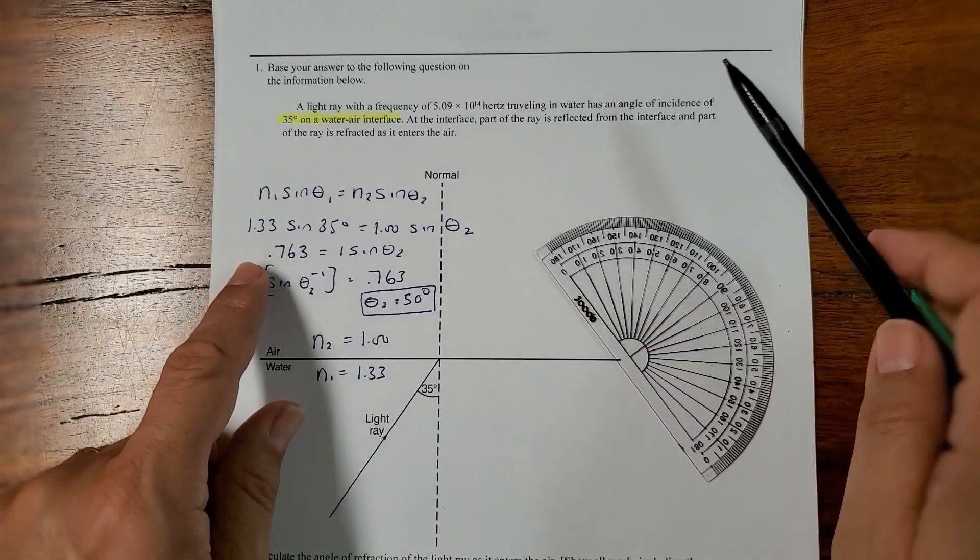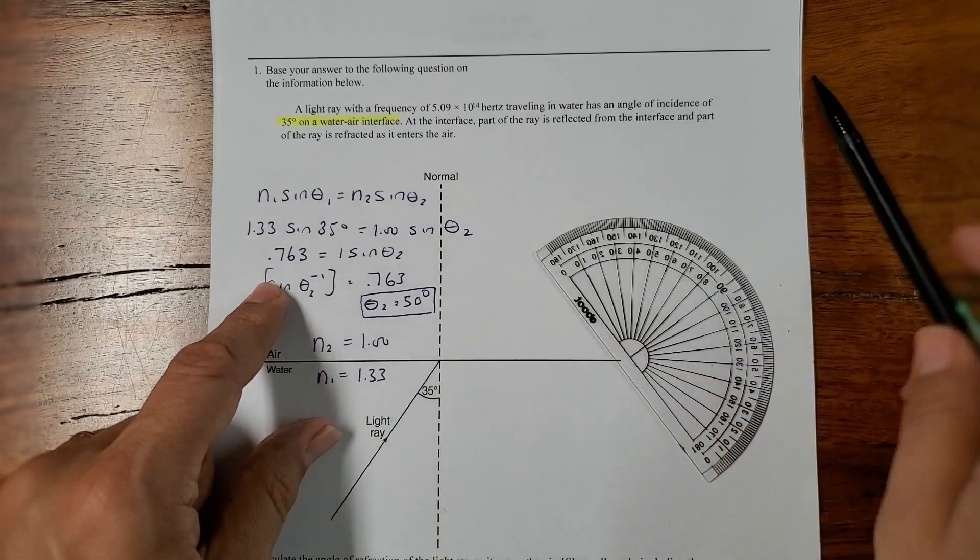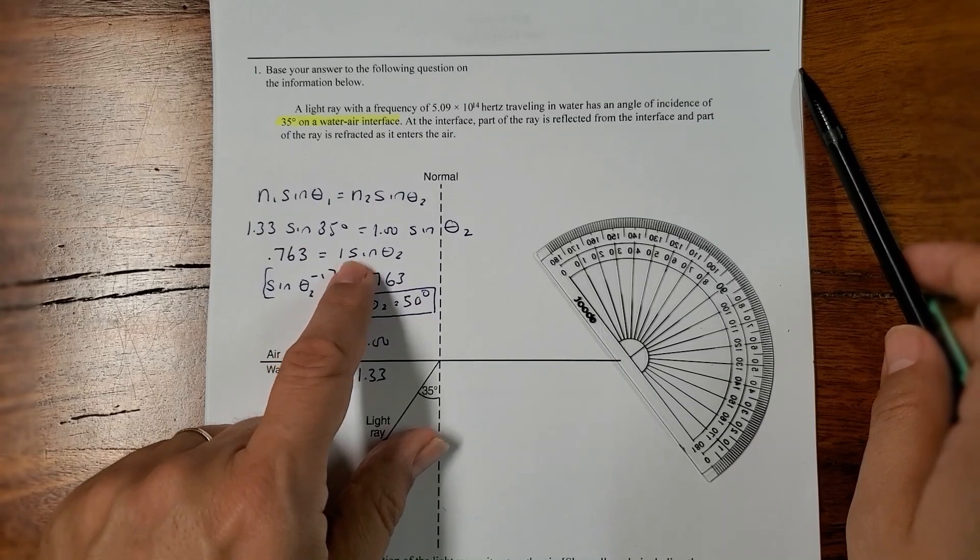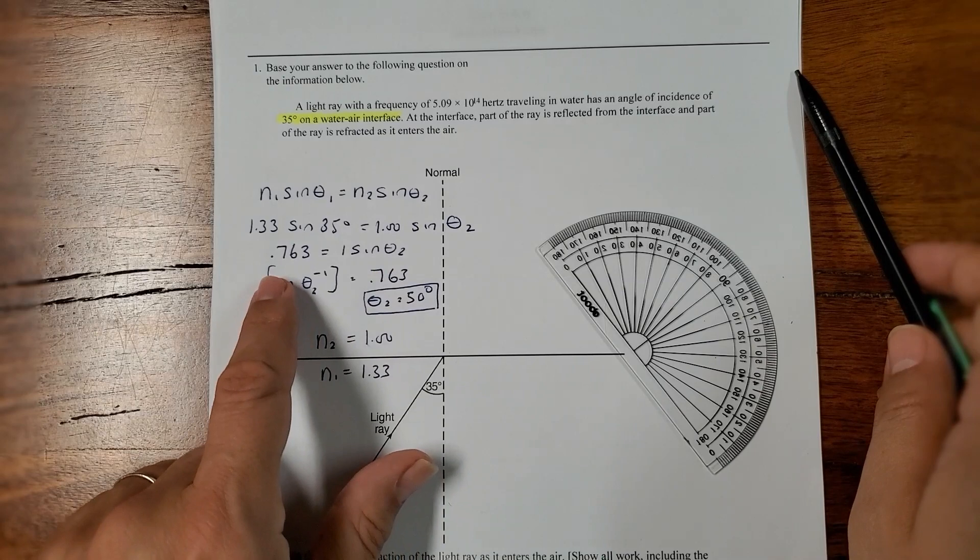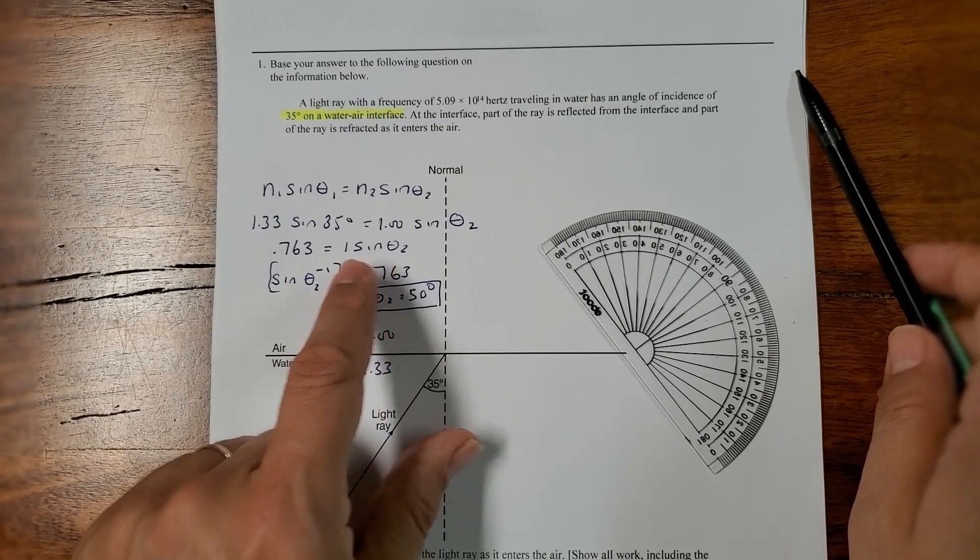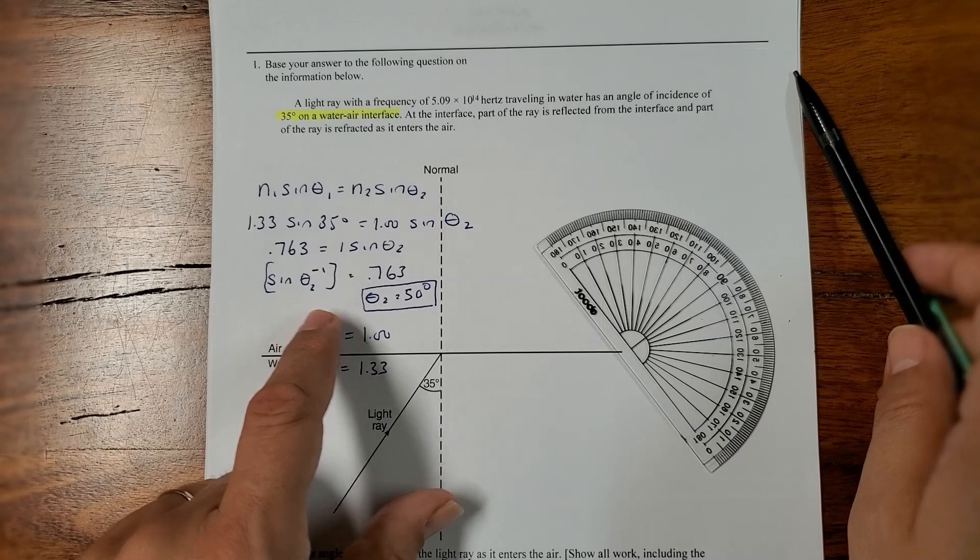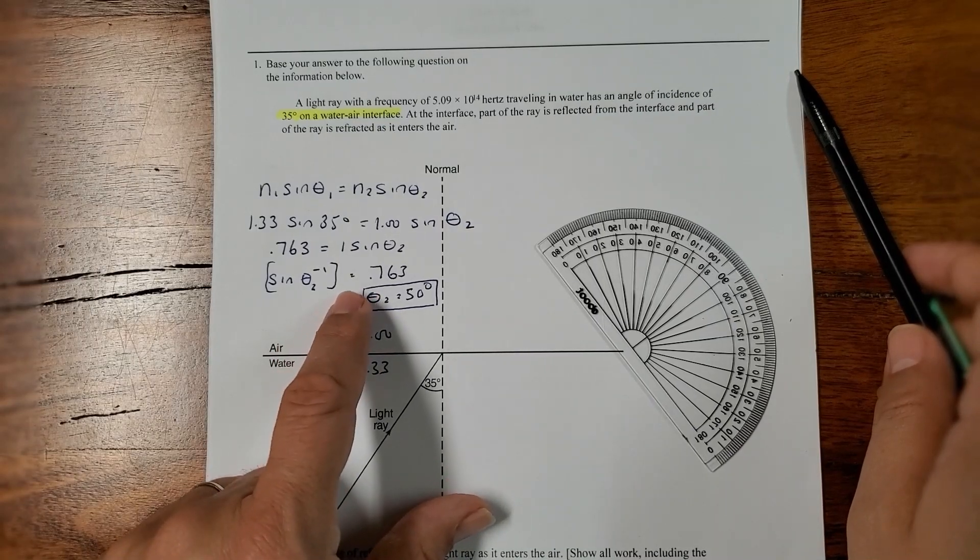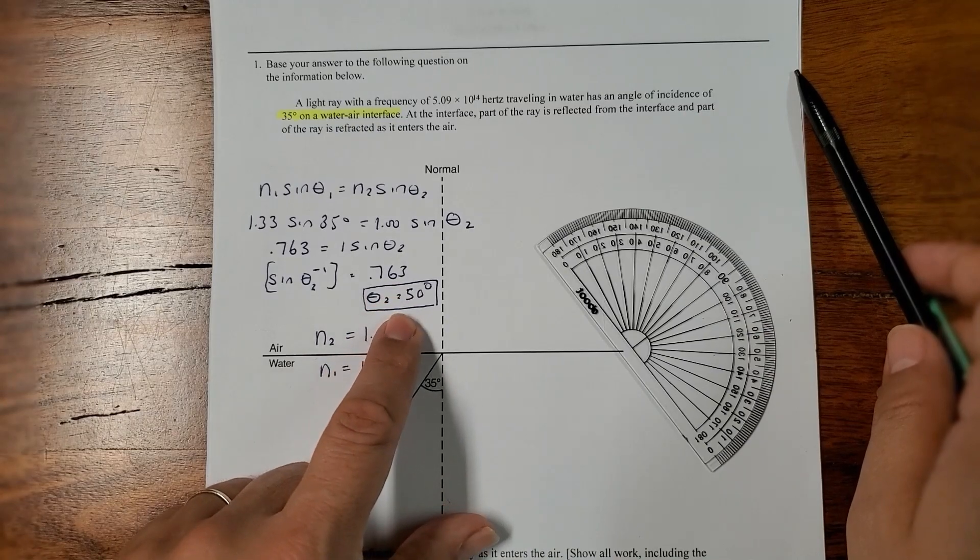So, we do n1 sine theta 1 equals n2 sine theta 2. We calculate 1.33 times sine of 35 and get 0.763. The index of refraction is 1, it has no units, times the sine of the angle. So, the sine of theta 2 is 0.763. We do the inverse sine of 0.763, and you get 50 degrees.